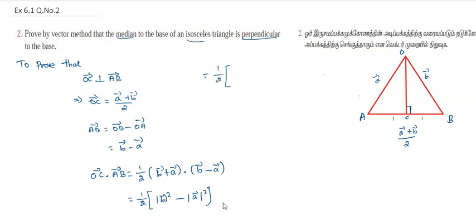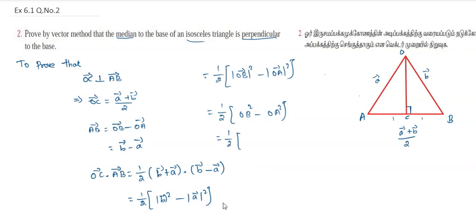Substituting, this becomes one-half into (modulus of OB vector squared minus modulus of OA vector squared). Removing the direction from the modulus gives one-half into (OB squared minus OA squared). Since this is an isosceles triangle, OB equals OA, so OB squared minus OA squared equals zero, and the expression becomes zero.